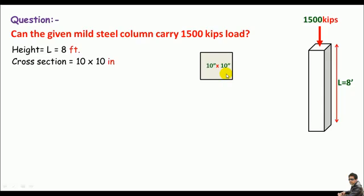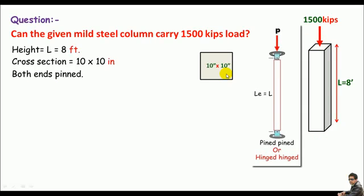But the data was not enough to answer the given question, that's why I asked about the end conditions. He said both ends of the given column are pinned or hinged. So both ends are pinned or hinged. Now the data makes sense, so let's do some solutions. The question is clear and straightforward: can the given mild steel column carry 1500 kips load?